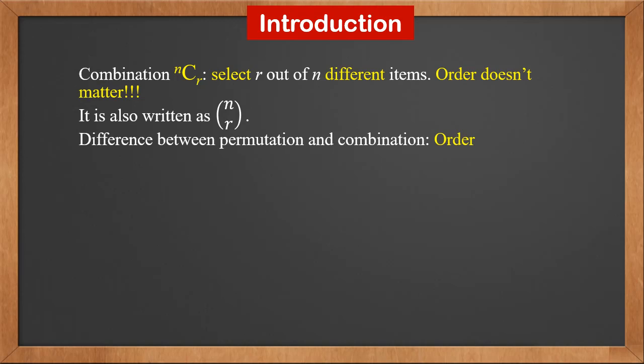The difference between permutation and combination is the order. In combination, the order of the selected r items doesn't matter.